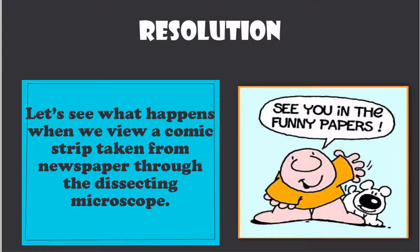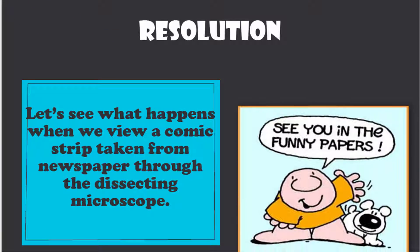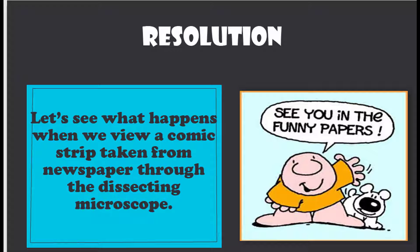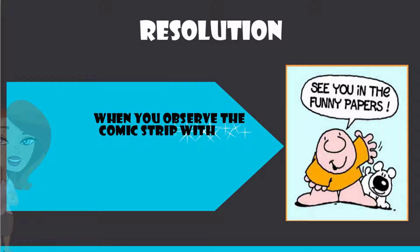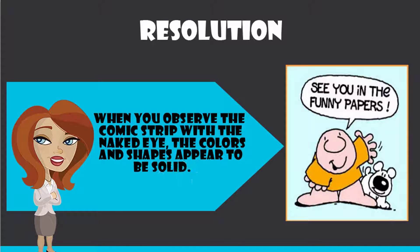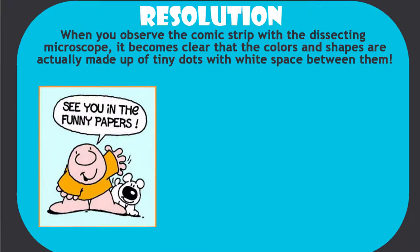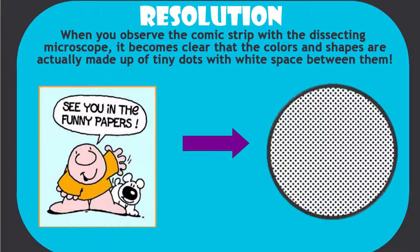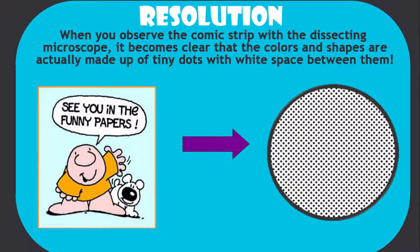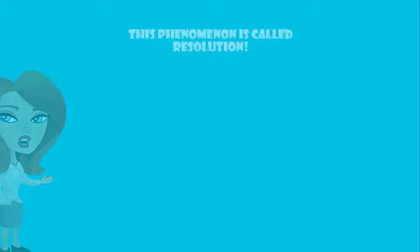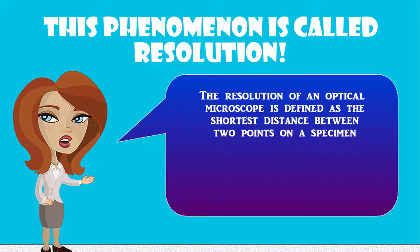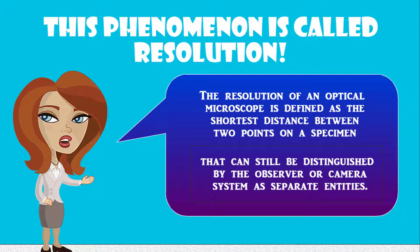Let's see what happens when we view a comic strip taken from a newspaper through the dissecting microscope. When you observe the comic strip with the naked eye, the colors and shapes appear to be solid. When you observe the comic strip with the dissecting microscope, it becomes clear that the colors and shapes are actually made up of tiny dots with white space between them. This phenomenon is called resolution. The resolution of an optical microscope is defined as the shortest distance between two points on a specimen that can still be distinguished by the observer or camera system as separate entities.